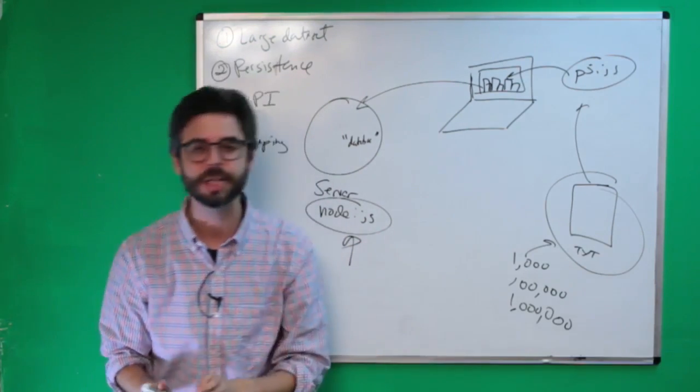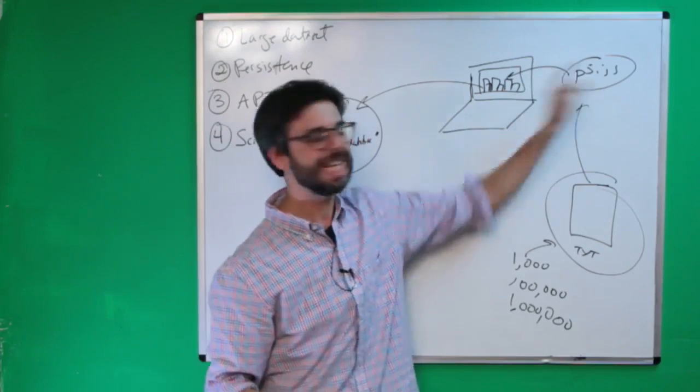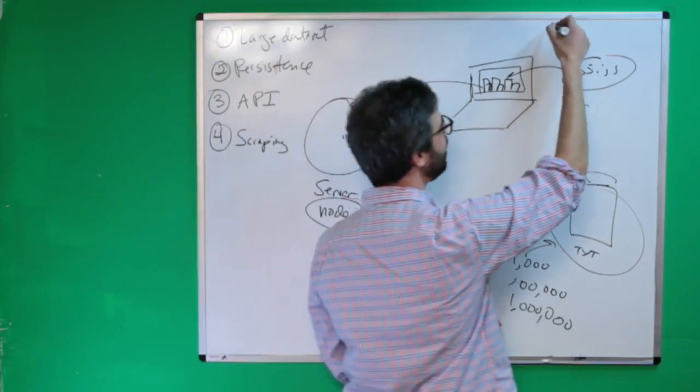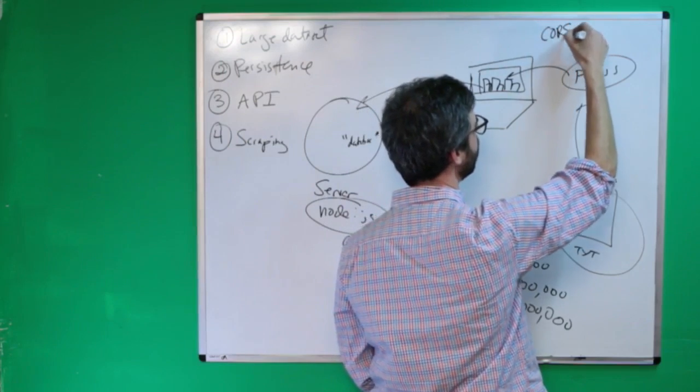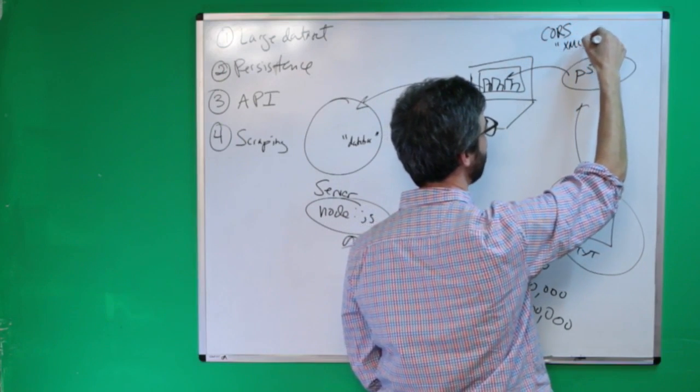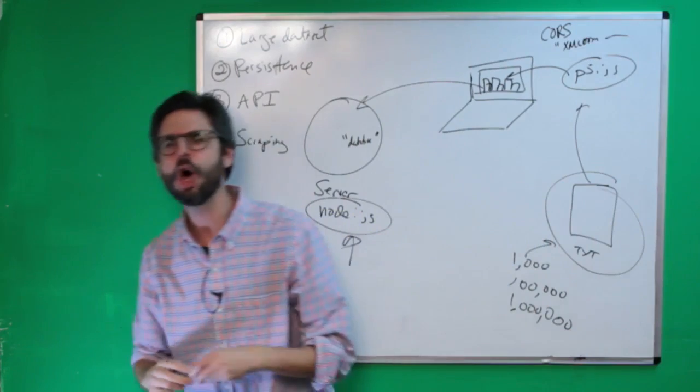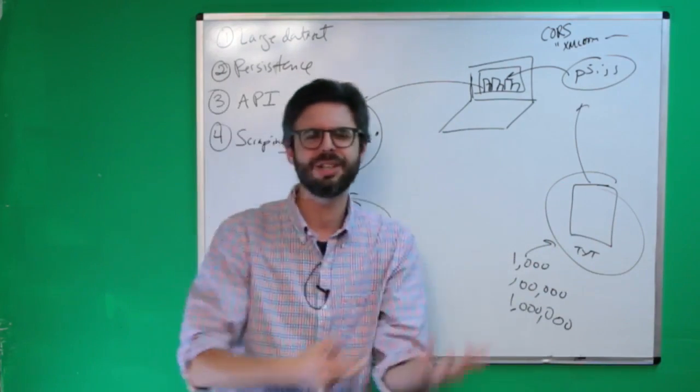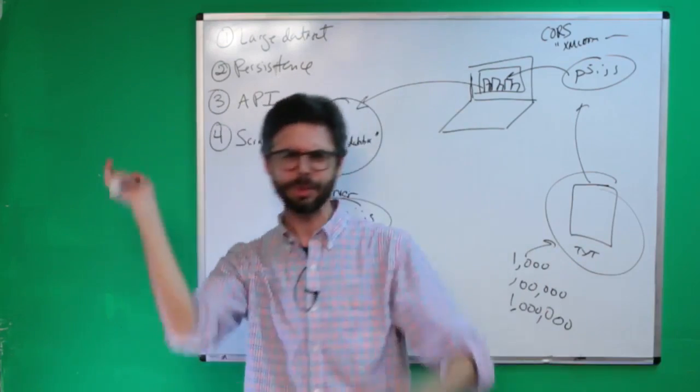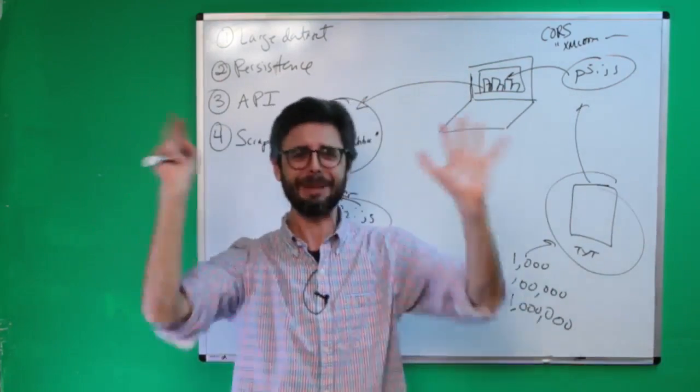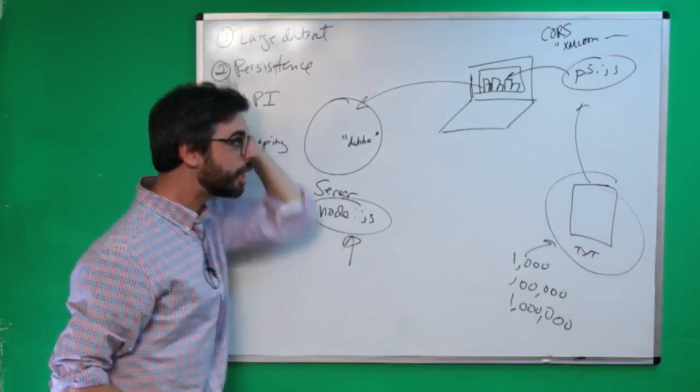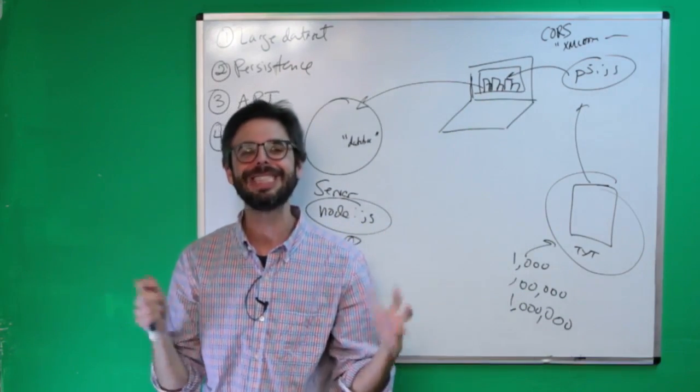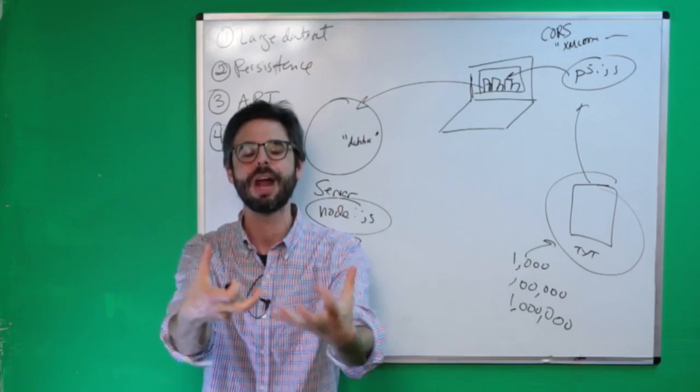But I'm saying scraping because one thing you might have noticed is in p5.js, if you try to... The bane of your existence might be this thing called CORS. Or you might see it as like XML HTTP request error. You might have tried to load image from some URL or load strings or load JSON. You get this error. I can't do it. Security, cross origin, resources sharing, not allowed, inaccessible, stop stop stop. So there's a lot of times where the client side for security, very good security reasons, is not allowed to reach to another server and request data.